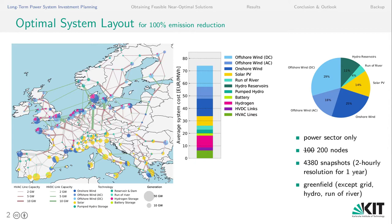We optimized generation, storage, and transmission in a greenfield approach for the most part. The exceptions are the transmission grid, hydropower, and run-of-river power plants. You can see that this system is very reliant on offshore and also onshore wind energy with a lot of transmission expansion in the system. Hydrogen storage pairs very well with onshore and offshore wind in the North Sea region, and solar, as you would expect, is the dominant energy carrier in the south of Europe.